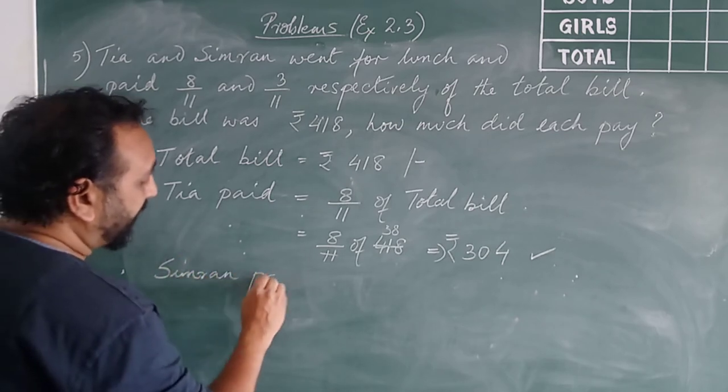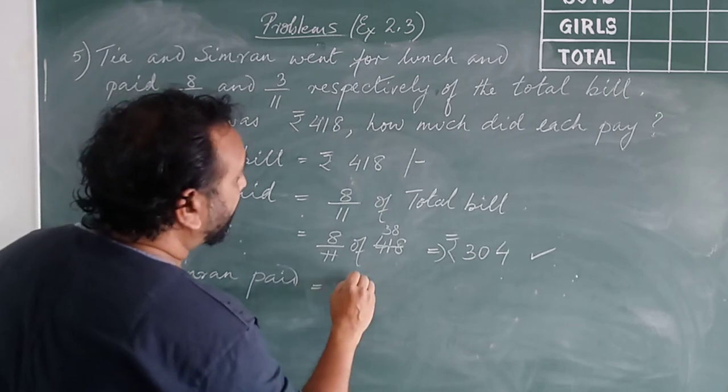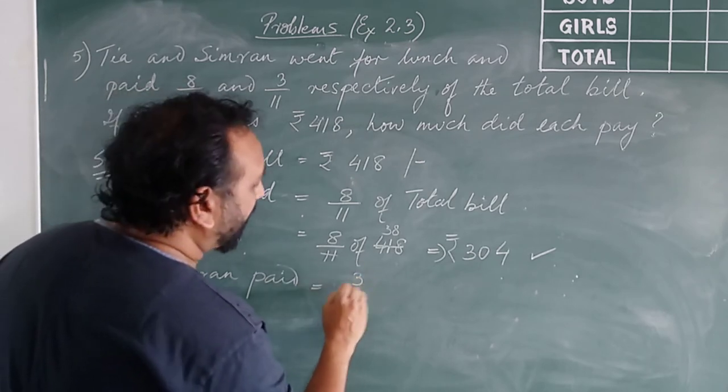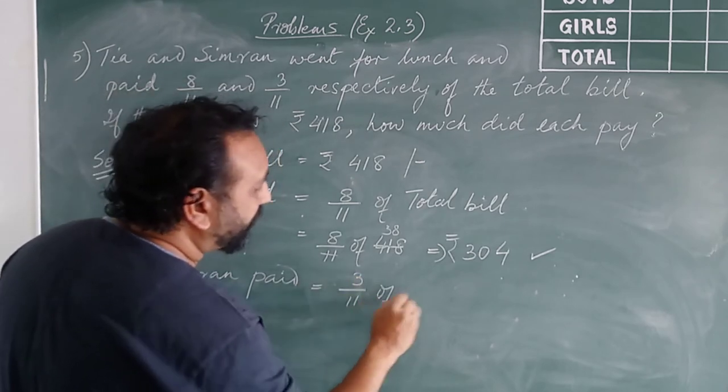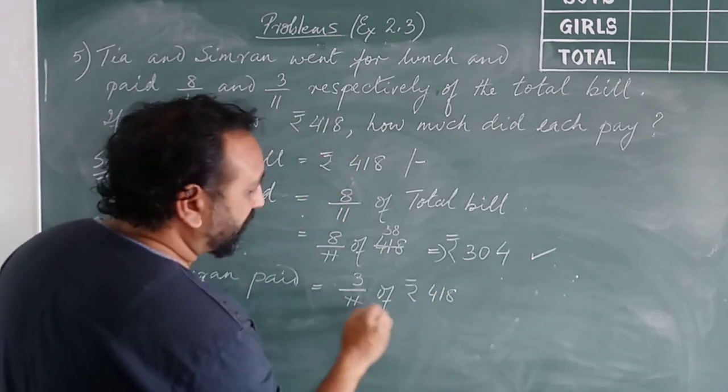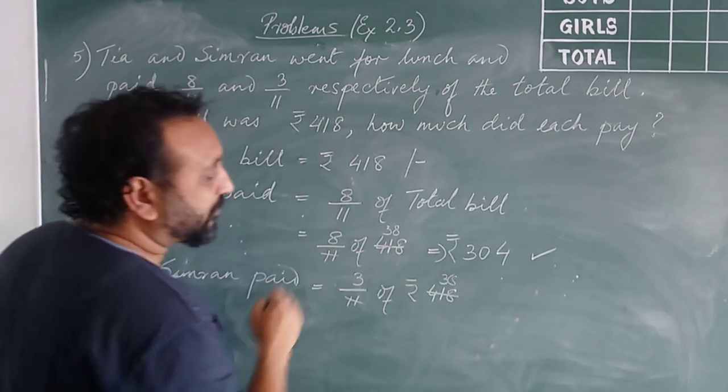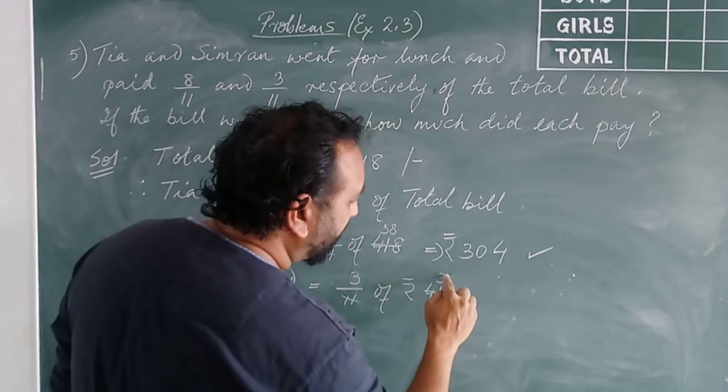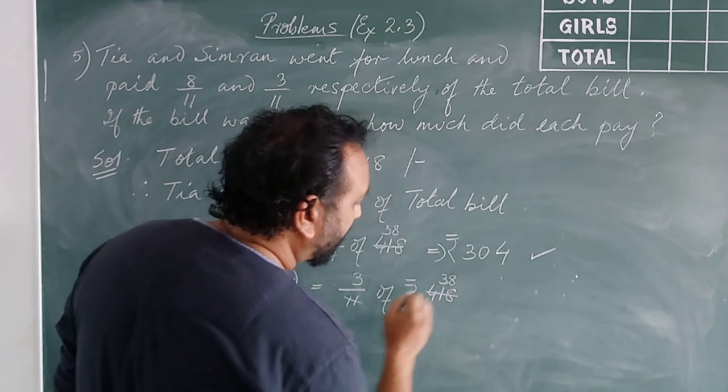Simran paid how much? 3 out of 11 of total, 418. So 11 will go this, we have worked it out over here, 38 times.